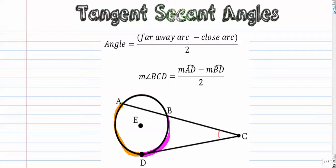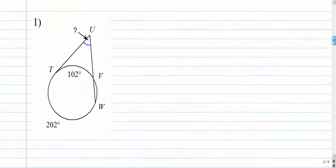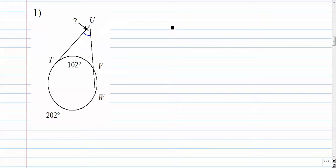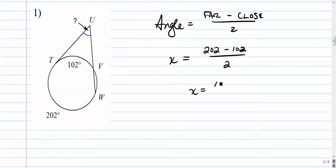Let's do a couple examples. Number one: the angle equals the far away arc minus the close arc over two. In this case, the angle is missing, the far away arc is 202, the close arc is 102, over two. 202 minus 102 is 100, over two is 50 degrees.